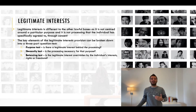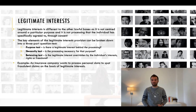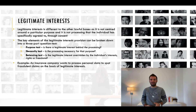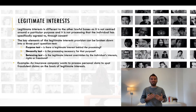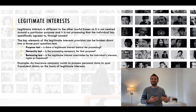Let's take an example. An insurance company wants to process personal data to spot fraudulent claims on the basis of legitimate interests. It considers the purpose test: it is in the company's legitimate business interest to ensure that its customers do not defraud it out of money. However, at the same time, the company's other customers and the public in general also have a legitimate interest in ensuring that fraud is prevented and detected. Having met the purpose test, the insurance company can then go on to consider the necessity test and then the balancing test.